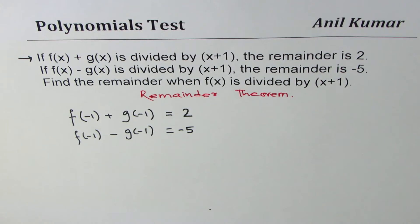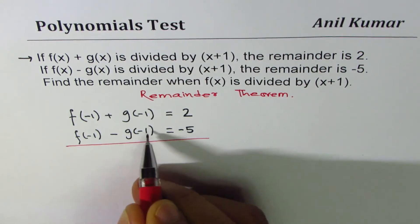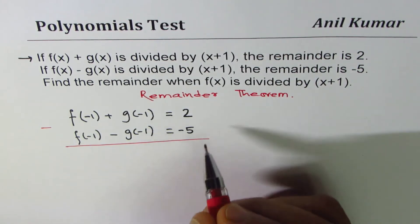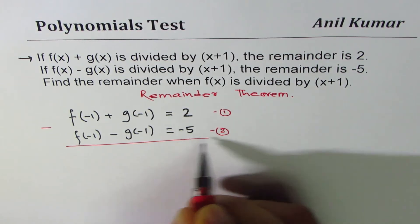So we get two equations. There are two unknowns and now it's simple. What you need to do is eliminate g of minus 1. This is equation 1, this is equation 2.